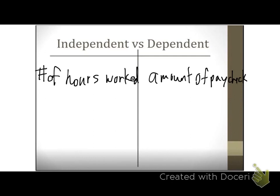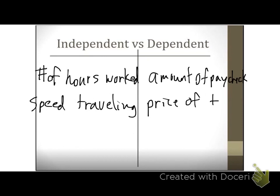If you drive over the speed limit, you could get a ticket. If I'm going 10 miles over the speed limit, my ticket is going to be a lot smaller than if I go 25 miles over. The faster I go, the higher my ticket's going to be. So the independent variable is the speed I was traveling over the speed limit, and the dependent variable is the price of the ticket. The price of the ticket depends on how fast I was traveling over the speed limit.